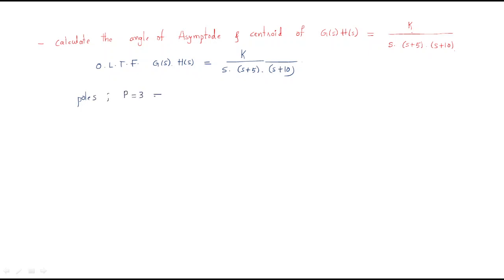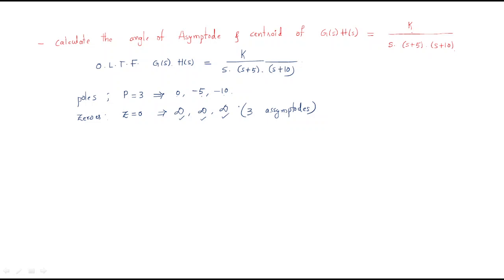How many poles are there? The number of poles P equals 3. Those poles are at 0, minus 5, and minus 10. The number of zeros Z equals 0 — we don't have any zeros. That means we need infinity branches, so we should have three asymptotes: one asymptote for each pole going to infinity.